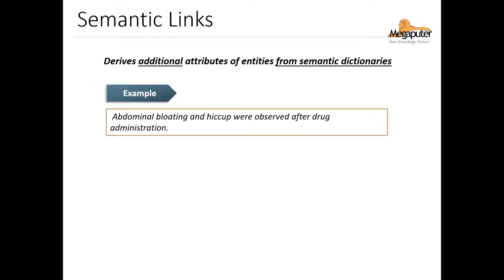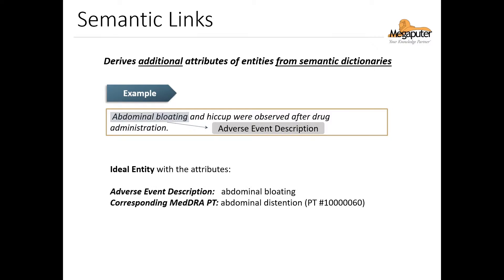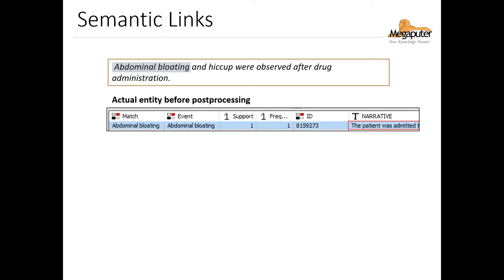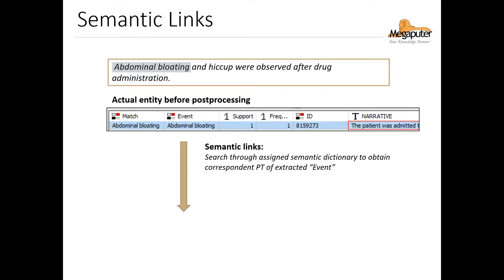This record states that abdominal bloating and hiccup were observed after drug administration. Abdominal bloating is considered a type of adverse event. In the MedRA ontology in Polyanalyst, the preferred term for abdominal bloating is abdominal distension, and it has a specific code associated with it. The semantic links post processor searches through the MedRA dictionary for the preferred term of the extracted event, such as abdominal bloating in this case. Based on this ontology, the system understands that abdominal distension is a more general term — a hypernym — to refer to abdominal bloating.